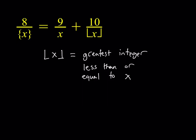For example, if you're looking at the floor value of pi, that's going to be 3 because pi is 3.14... But if you look at negative pi, that's kind of interesting — it's not going to be negative 3, because negative pi is negative 3.1 something, and the floor value is going to be negative 4, because the floor value is always less than or equal to x.